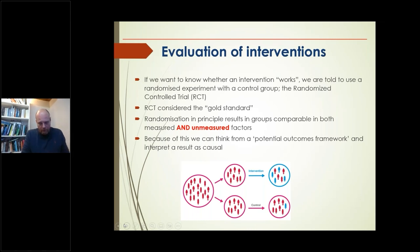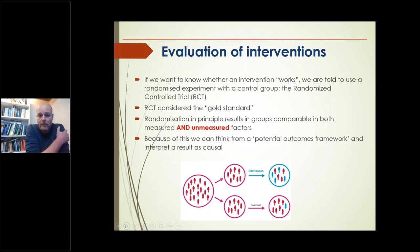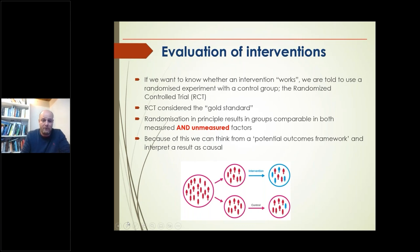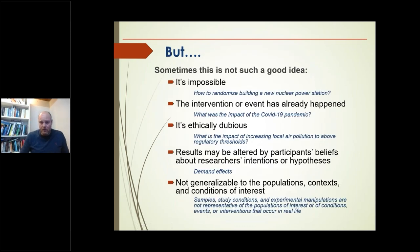If we want to know whether an intervention works, we're generally told to use randomized experiments with a control group — an RCT — which is considered the gold standard. If it's randomized, that makes both groups comparable in terms of measured and unmeasured confounders. You can then use a potential outcomes framework, assuming that if you had given the intervention to the other group, you would have gotten more or less the same result. But that's a good idea in principle that creates a couple of problems.